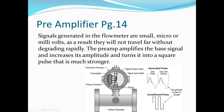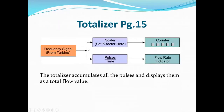The preamplifier amplifies the signal from the sensor, increases its amplitude, and converts it into a stronger square pulse that is used by the transmitter.